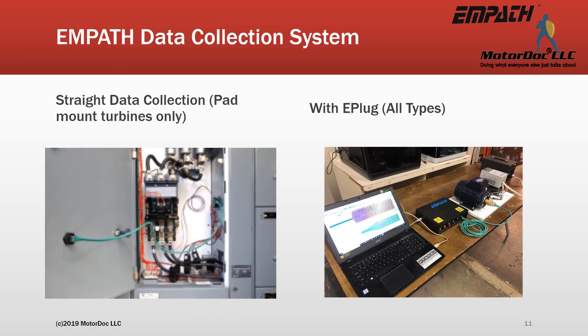When the transformer is located in the nacelle, such as with Vestas designs, an E-plug is vital. The CTs are installed and voltage is connected at the point between the controls and stator. A CAT-5E cable is used to drop the data to the base of the tower, where the data collector and laptop are used to obtain the data. The results will be the same.